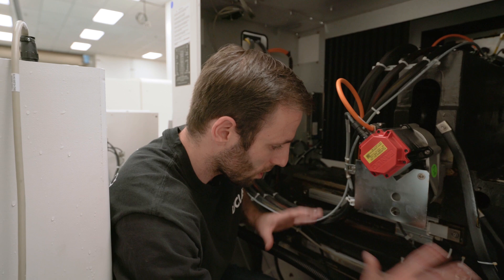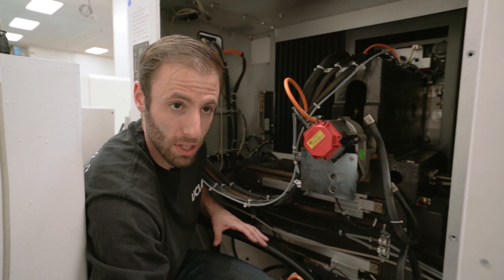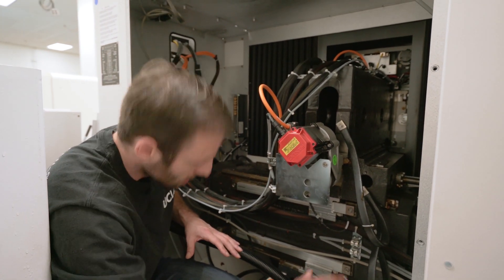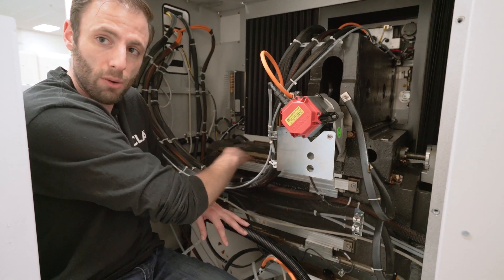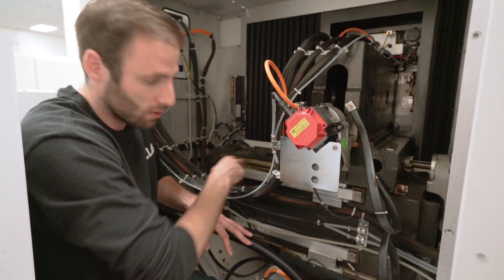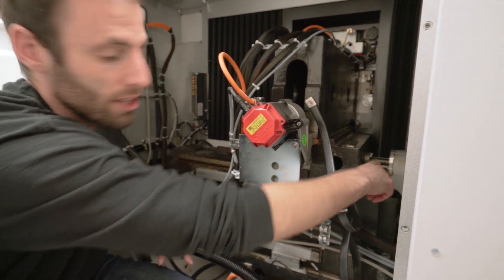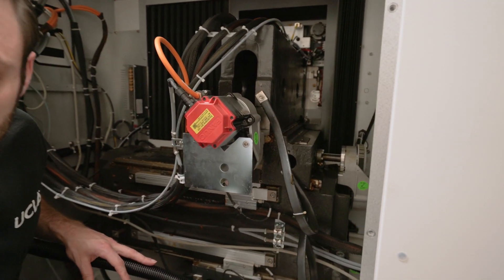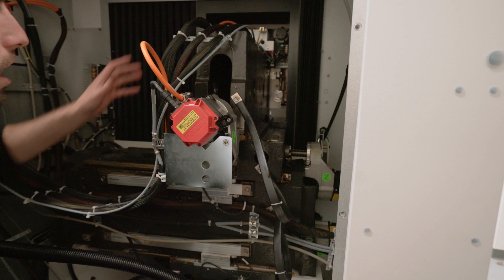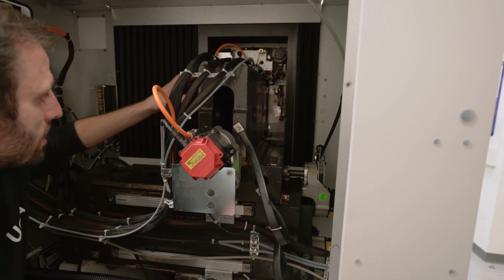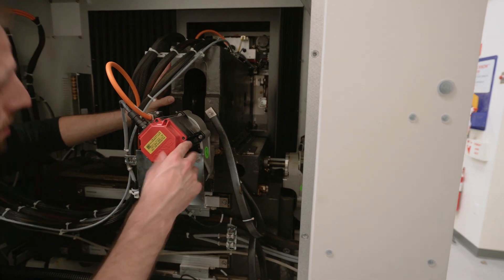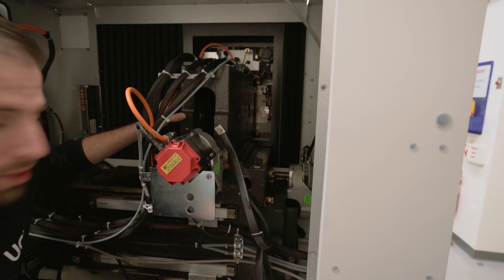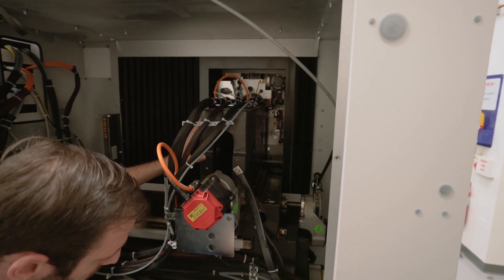So here we see the whole entire assembly, the X and Y axis. Right here we have the X axis. You can actually see the rails that it rests on right here, which is what we need to grease. And here is actually the ball screw and motor that controls it. On top here is the Y axis. And once again, right now we can't see the rails but in the next position we'll be able to see the rails. But this is the motor that controls it.